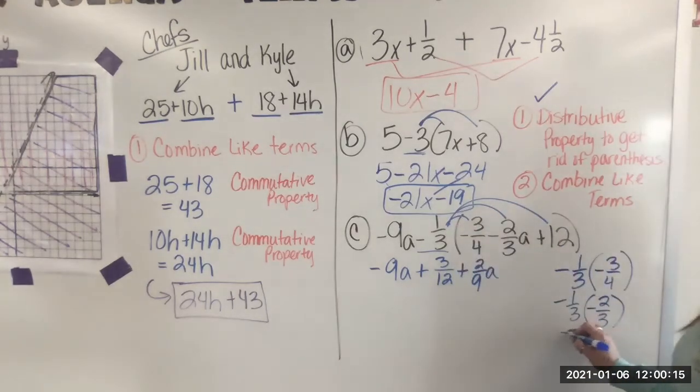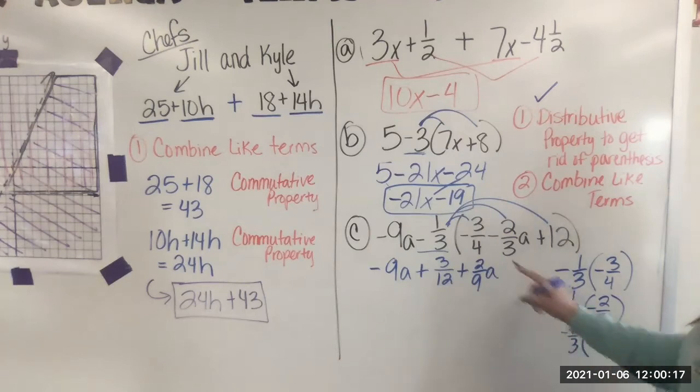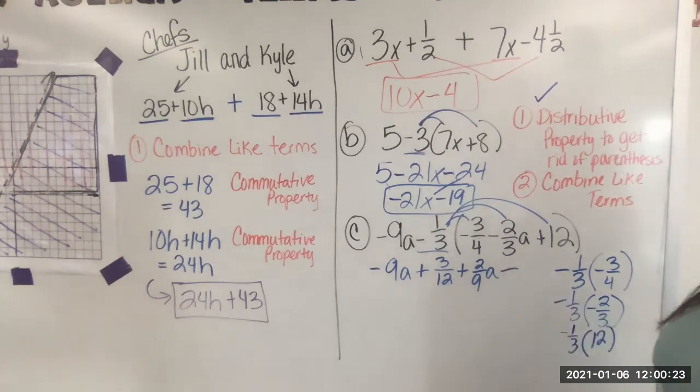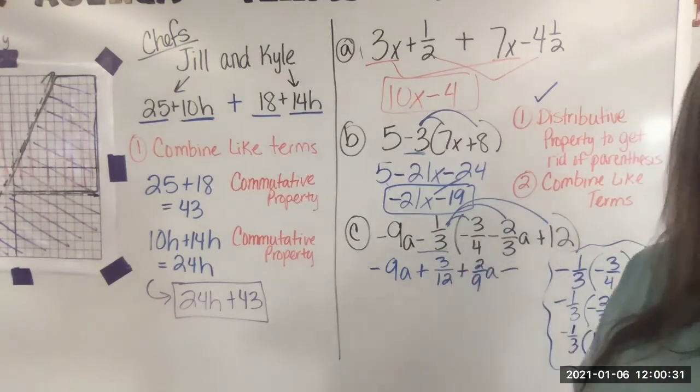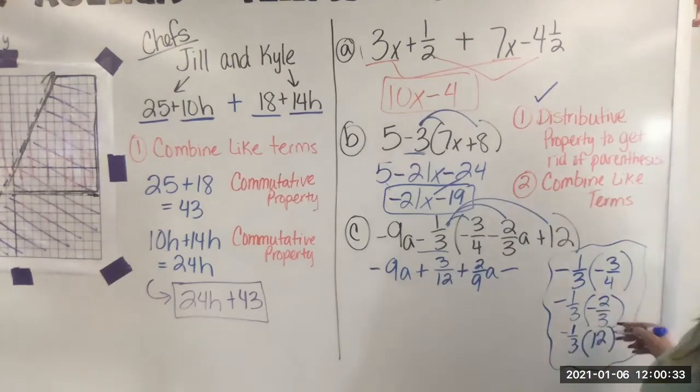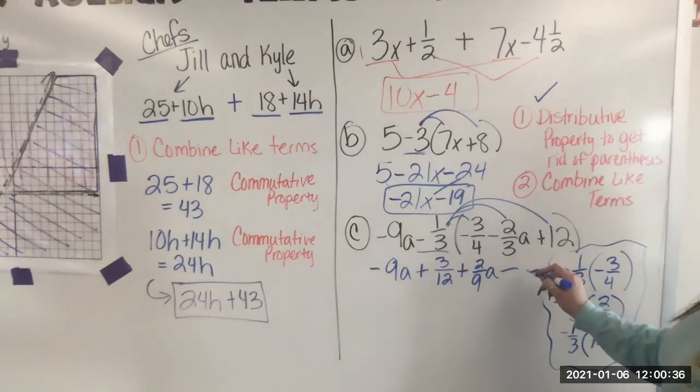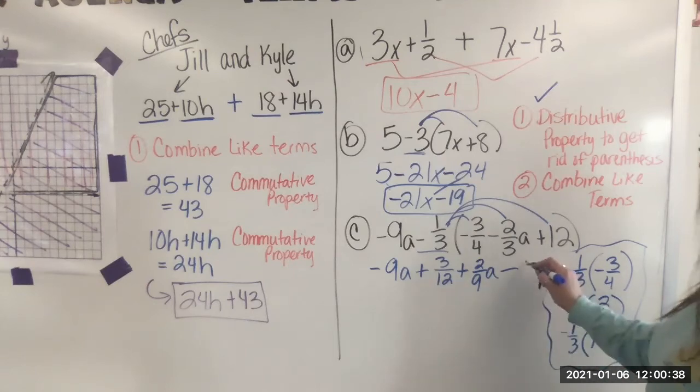Last one is negative one third times 12. Well, this one is a negative times a positive. So automatically my answer is going to be negative. I know that. Let me separate this. Now I want a third of 12. Well, that's four, right? And we can see that if we multiply straight across, we get 12 thirds. So I'm just going to put that it's a four because that's what it is.